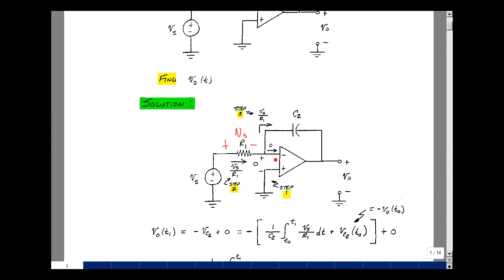That current comes into this node. Nothing goes in the op-amp, so it has to all go into the capacitor and create a drop in this direction.